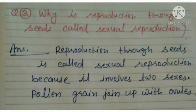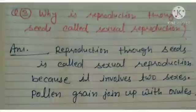Number 3: why is reproduction through seeds called sexual reproduction? Answer: reproduction through seeds is called sexual reproduction because it involves two sexes — pollen grains join up with ovules.